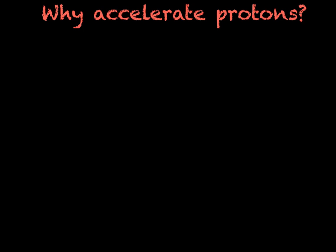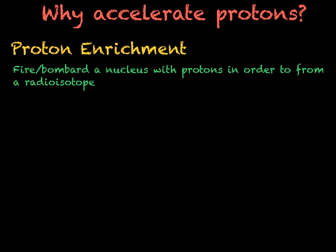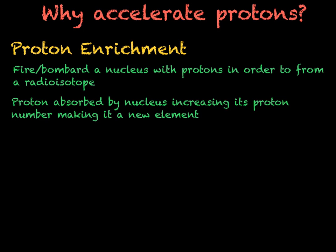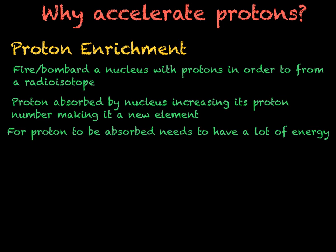As we have now looked at the theory behind protons, it is important to understand why we will accelerate protons. We're going to look at one particular use of this, called proton enrichment. As I previously mentioned, proton enrichment involves firing protons at a nucleus in order to form a radioactive isotope. The proton will be absorbed into the nucleus, increasing its proton number and hence creating a new element. In order for the proton to be absorbed by the nucleus, we need a high level of energy, and hence this is where our cyclotron will come in.